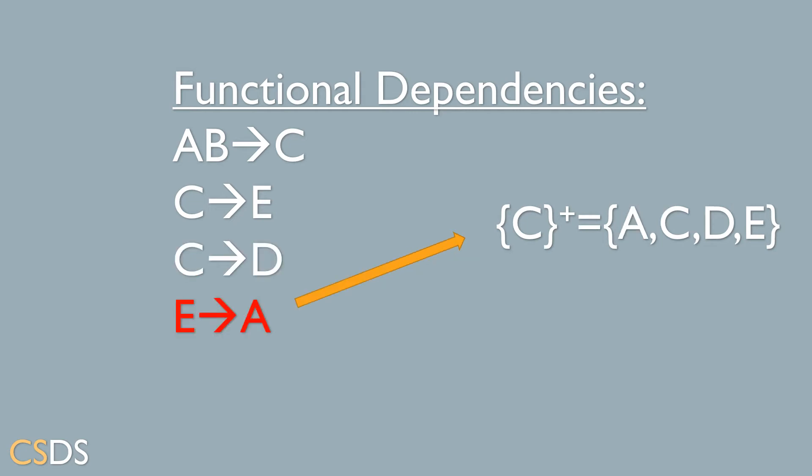Now that we have checked all the functional dependencies and found all the attributes that can be determined from the attribute C, we will do the same process for the attributes in the closure that we have already found. Now we will check the attribute E. We can see that E goes to A, so we add A to the closure of C. We have now achieved our final closure of C.